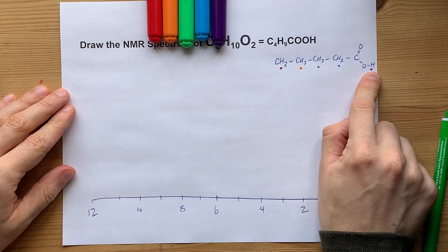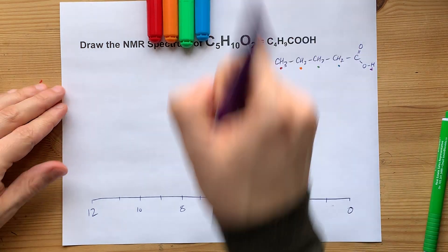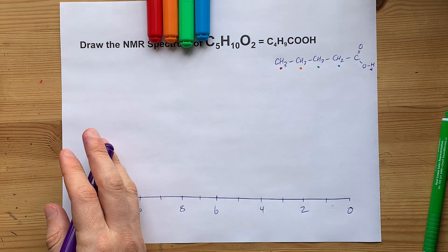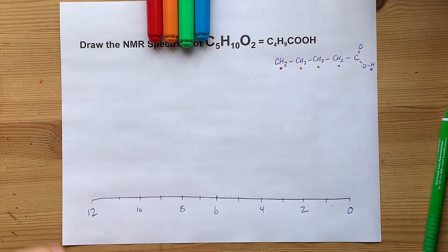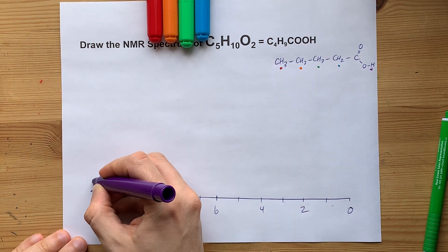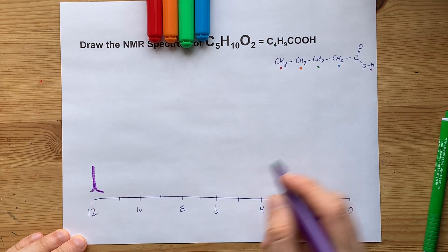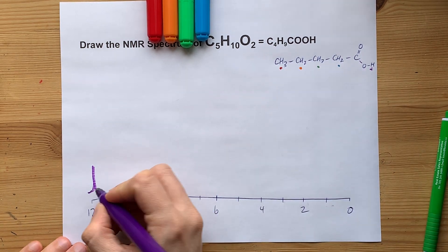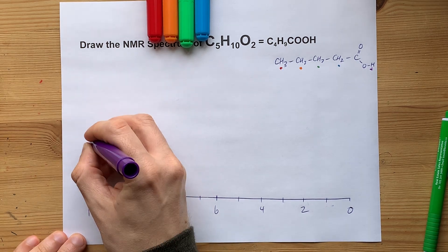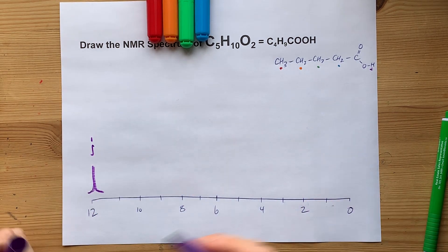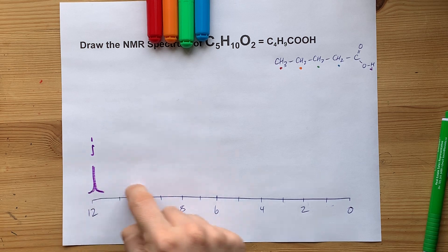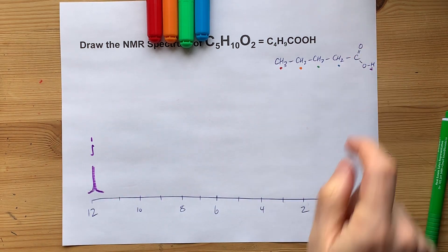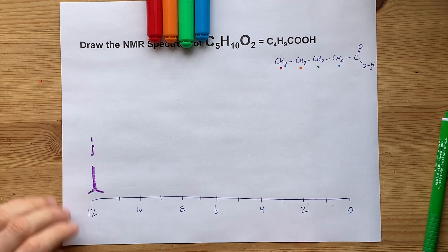First of all, the carboxylic acid hydrogen is going to be very far downfield — my mistake, this is downfield, not upfield. So I'm going to put a peak there and just leave it. It is so isolated from the other carbons, it is not split. It will integrate to about one on a ratio level, and it's that far down simply because it's a COOH group.